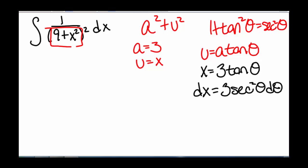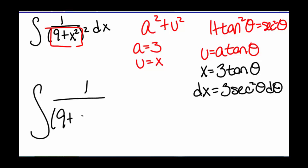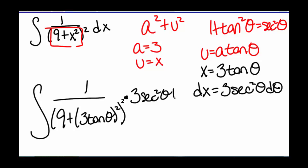So we're ready to substitute in. We have the integral of 1 divided by the quantity (9 plus 3 tangent of theta) squared, that whole thing squared, times dx, where we substitute in 3 secant squared of theta d theta. We're using the substitution that a² plus a² tan²θ equals a² sec²θ.